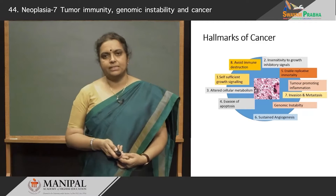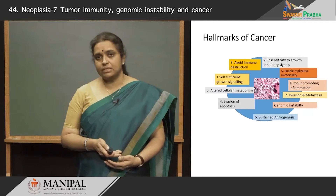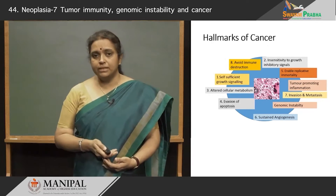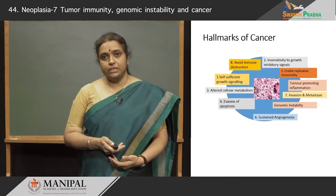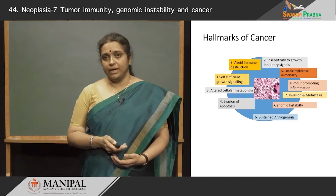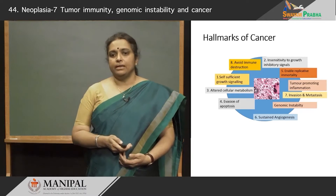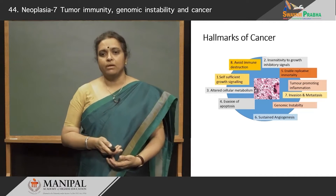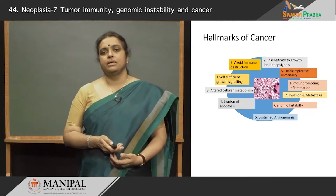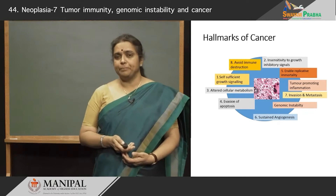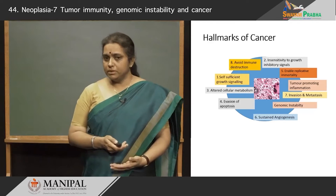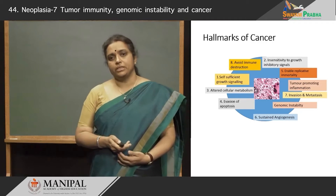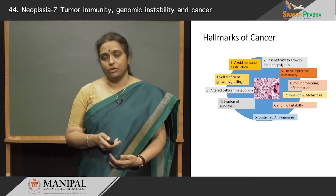We have already talked about the hallmarks of cancer — how these various characteristics of cancer cells define cancer — most important being self-sufficient growth signaling, the insensitivity to growth inhibitory signals, the tumor suppressor genes, how viral oncogenesis is dependent on these genes, invasion and metastasis, and sustained angiogenesis. Today I will be talking about how immunity plays a role in cancer, how cancer cells avoid immune destruction, and also how genomic instability is a key hallmark of cancer.